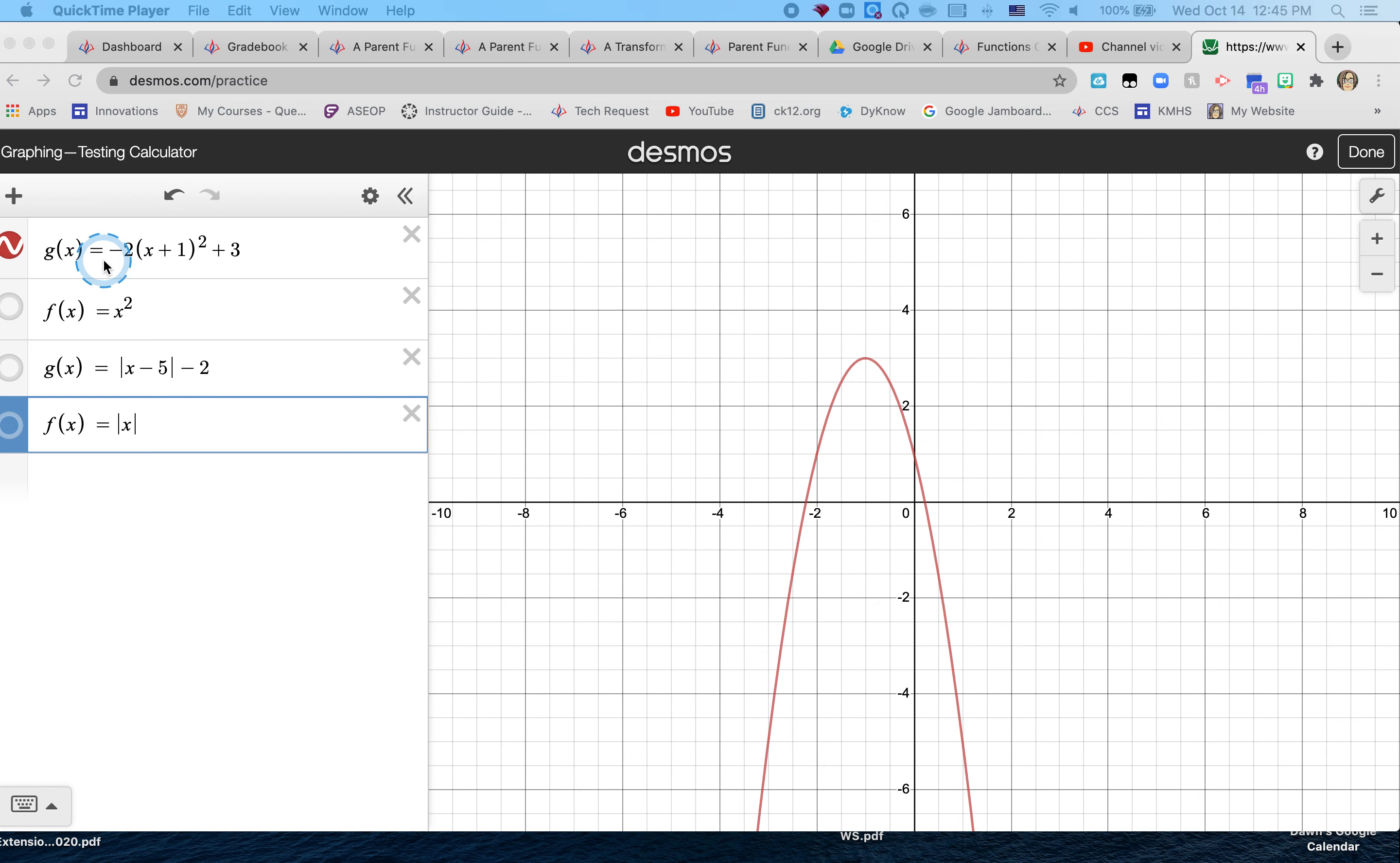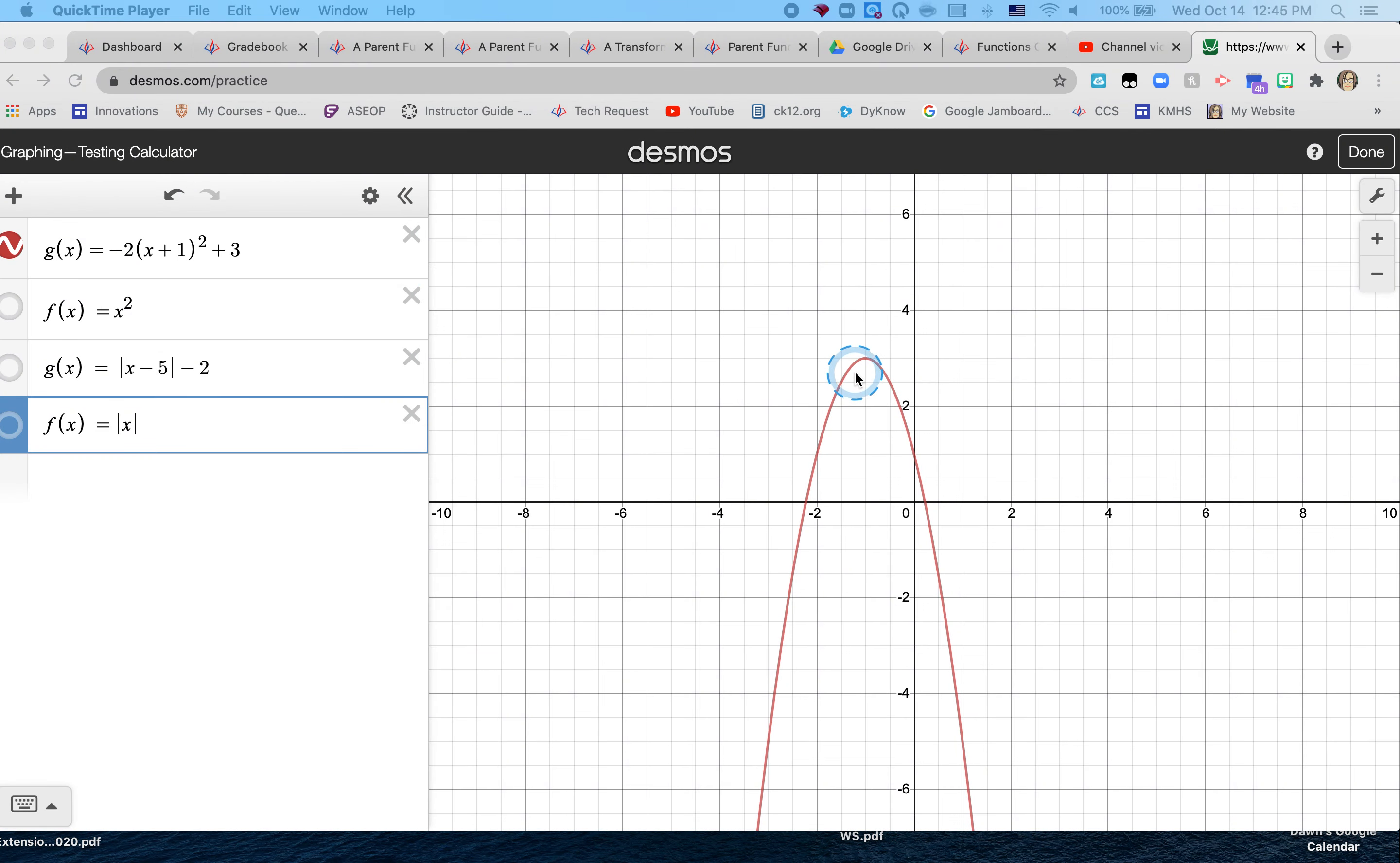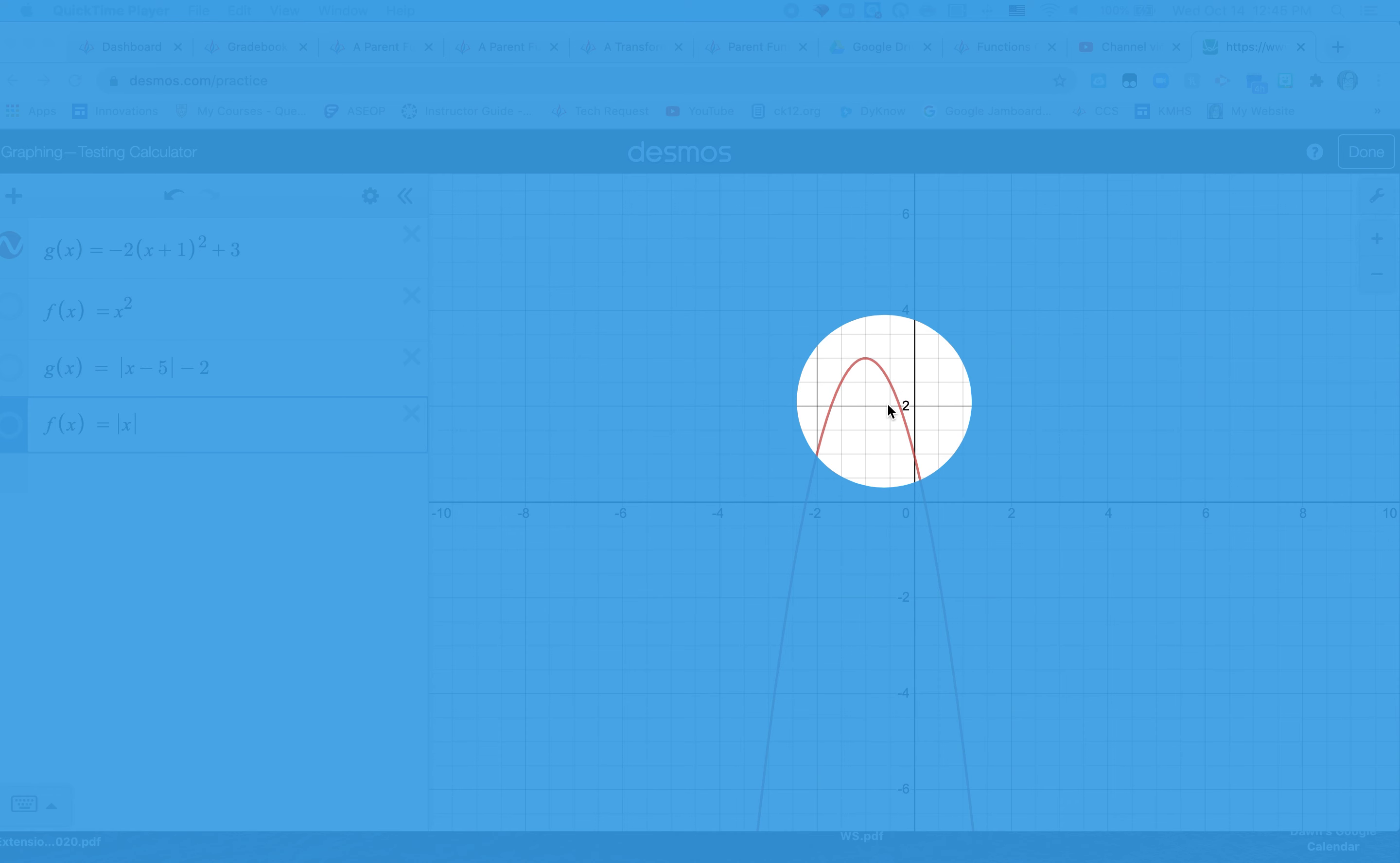Here the equation g(x) equals negative 2 times the quantity x plus 1 squared plus 3. I've graphed that and my graph is in red. You can see it here.